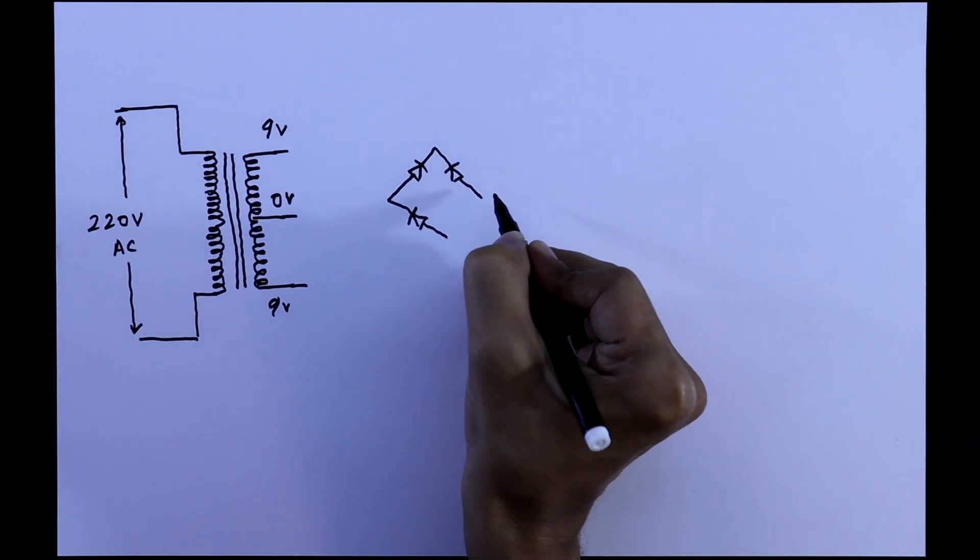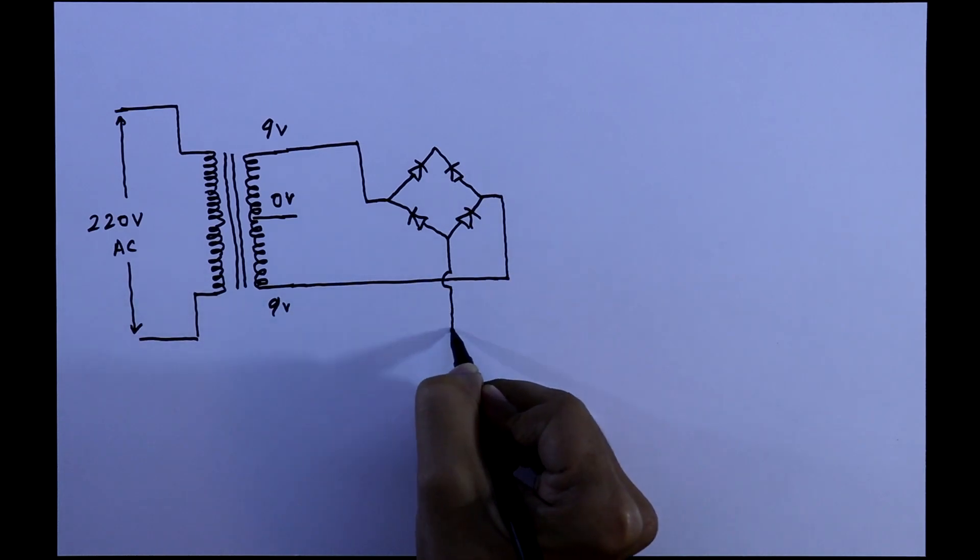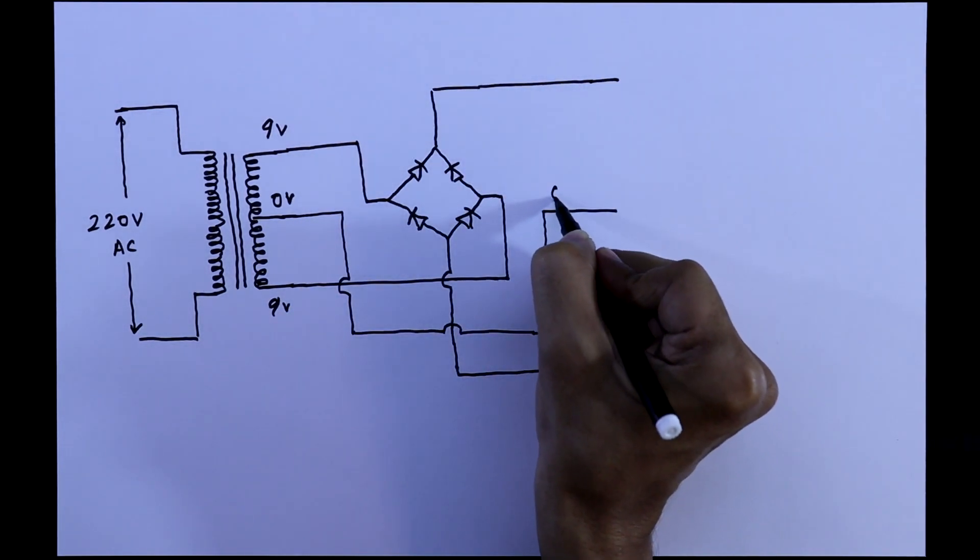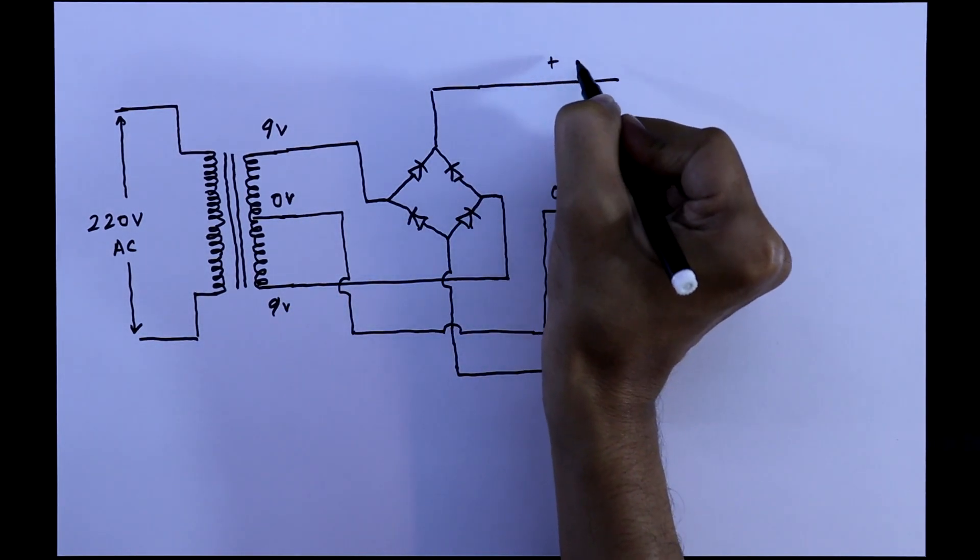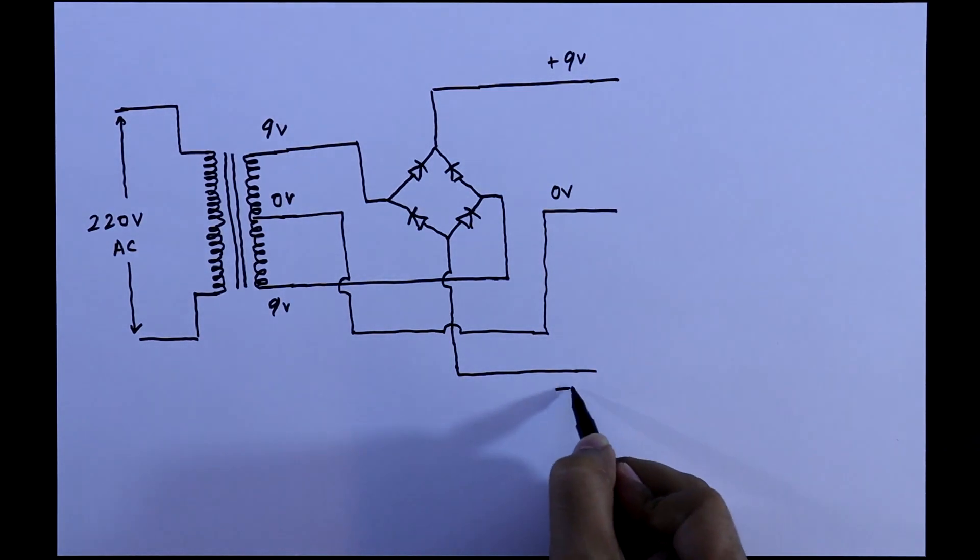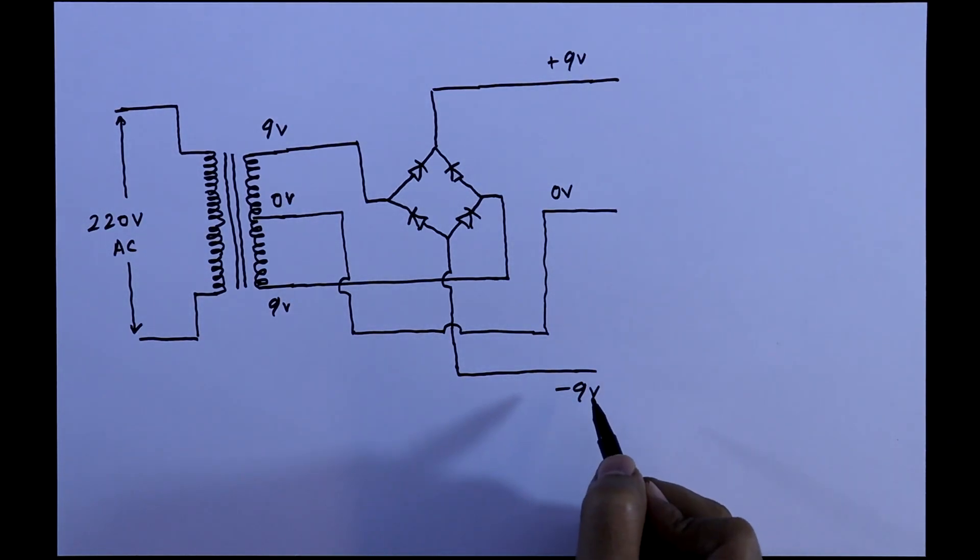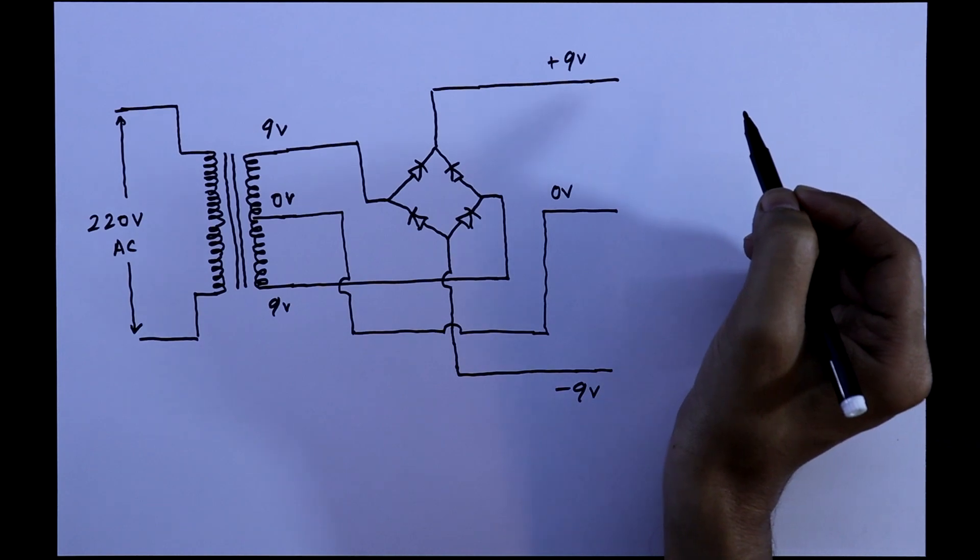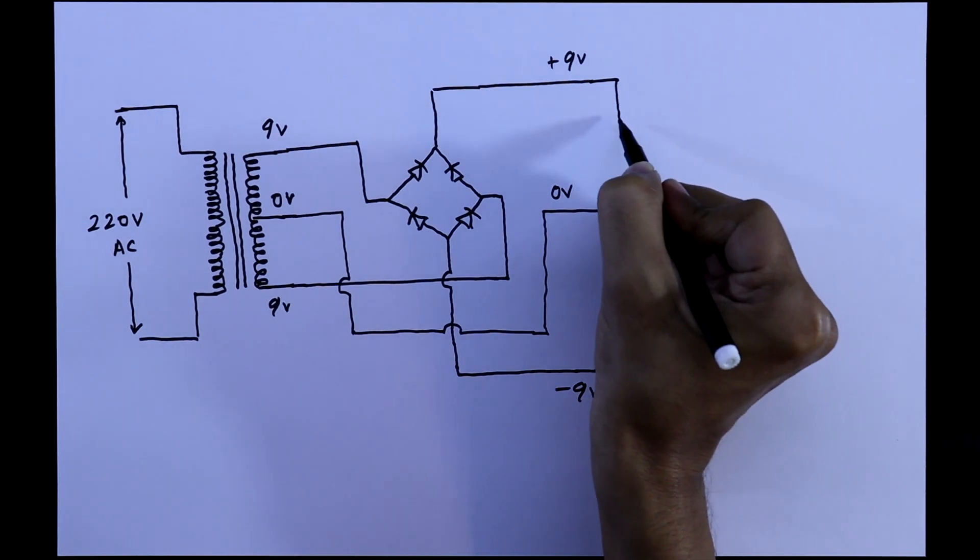So we need a full wave rectifier. Here it is 0 volt, positive 9 volt, and negative 9 volt. It is unregulated. Before the regulator IC, we need to connect an electrolytic capacitor.